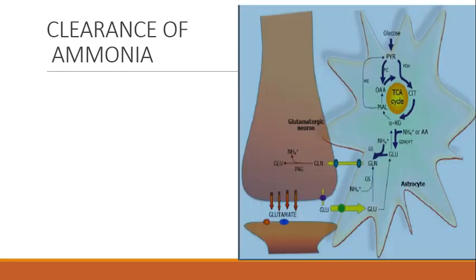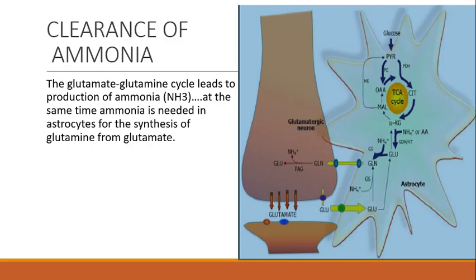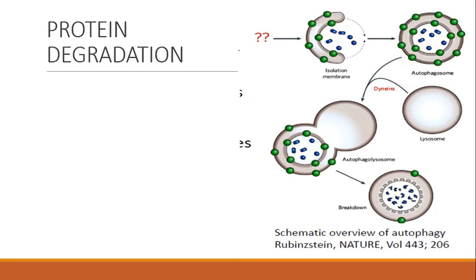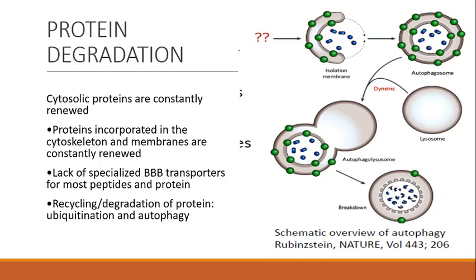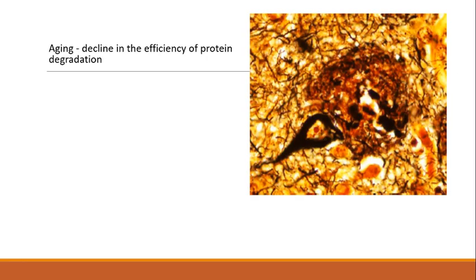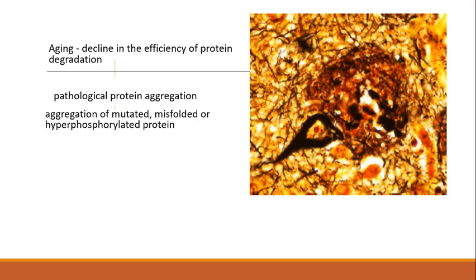There are a variety of waste products produced in the CNS. For example, ammonia is produced in the glutamate-to-glutamine cycle but gets rapidly eliminated by diffusion. Various proteins are also degraded in the CNS — these proteins are part of the cytosol and cell membranes and can be degraded by autophagy or ubiquitination, a process in which ubiquitin is tagged to the protein before autophagy. With aging, there is a decline in the efficiency of these protein degradation pathways, causing pathological proteins to aggregate — misfolded, hyperphosphorylated proteins accumulate in intracellular and extracellular spaces, leading to various neurodegenerative diseases.